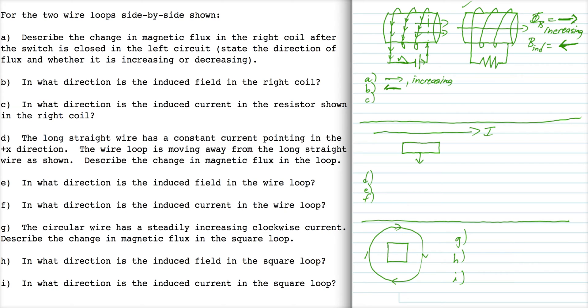In part C, if you have an induced field that points this way, then that corresponds to an induced current that goes up like this on the front side, down in the back, and then through this resistor from right to left.